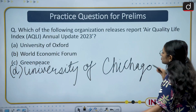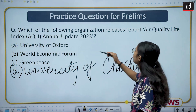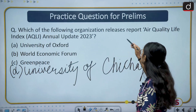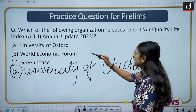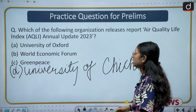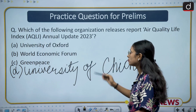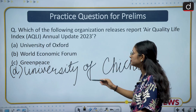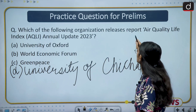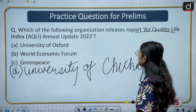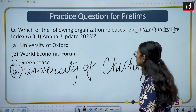Moving to the practice question for prelims — today's question is: which of the following organizations releases the report 'Air Quality Life Index Annual Update 2023'? The options are: University of Oxford, World Economic Forum, Greenpeace, or University of Chicago. You have to answer which organization released this report.